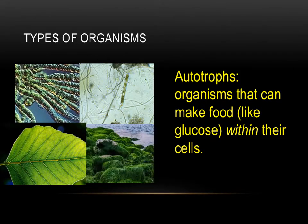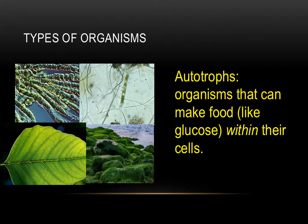Autotrophs are those organisms that can make food, such as glucose, within their cells. Examples include plants, certain bacteria and protists, as well as algae. They have the cellular machinery that allows them to produce energy-storing food molecules. This is why they're also known as producers.